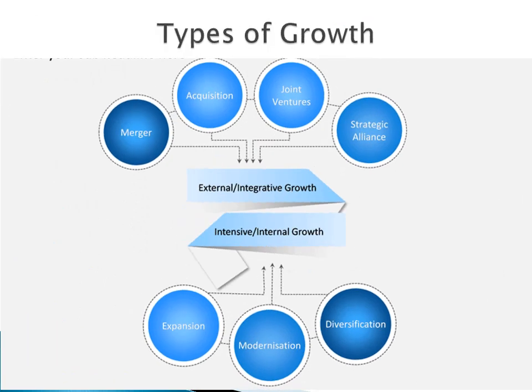Breaking down the types of external growth, you see merger, acquisition, joint venture, and strategic alliance. In the case of LG and Hisense, it feels like a strategic alliance because each is still producing their own independent products while coming together on some features. We saw this with Sony Ericsson — a strategic alliance between Sony's phone company and Ericsson — which produced the Sony Ericsson phone. A joint venture means more than two parties putting their heads and resources together. Internal growth, called intensive growth, has to do with expansion, modernization, and diversification from within.